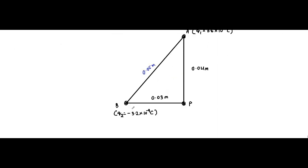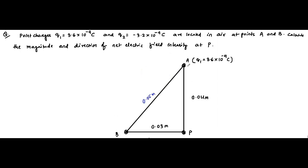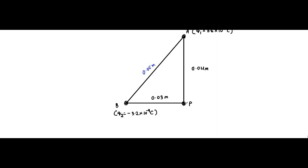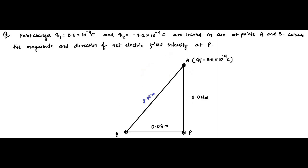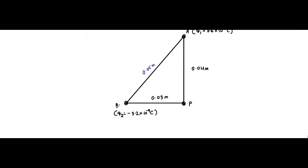Now we have to calculate the electric field due to the individual charges: q1 placed at A and q2 placed at B, at point P respectively. Here q1 is 3.6×10⁻⁹ coulomb and q2 placed at B is -3.2×10⁻⁹ coulomb. The basic principle of electric field calculation is that at the point where the electric field is to be calculated, we assume there is a unit positive test charge present — we assume +q0.